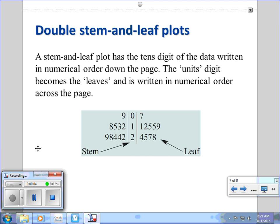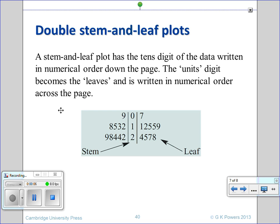Hi Year 11, today we're looking at double stem-and-leaf plots. They're double because there's two of them in one section. For example, this one here has our stem and our leaves on either side. This could be Class A and Class B, or it could be male and female.